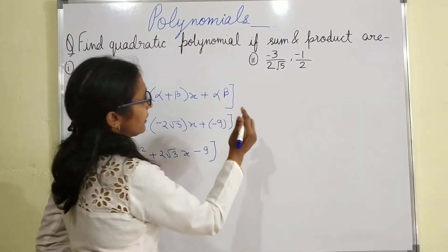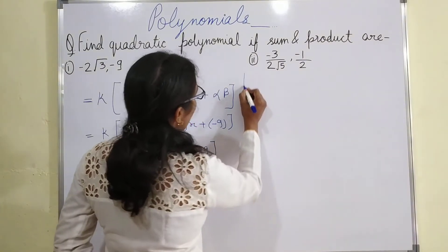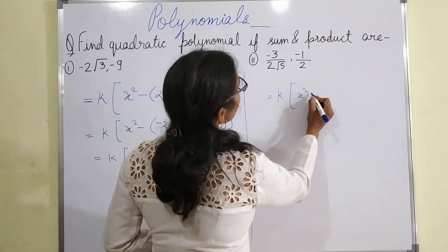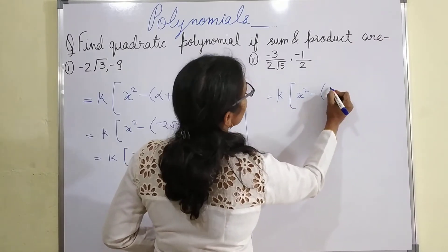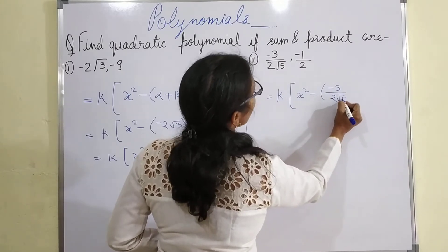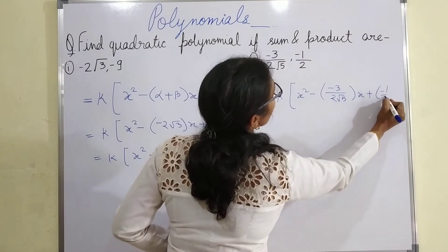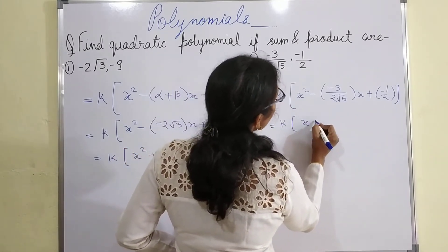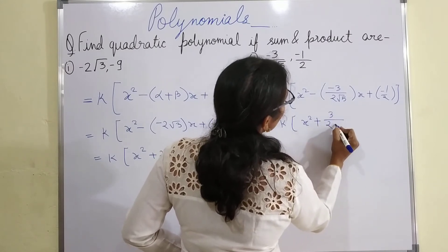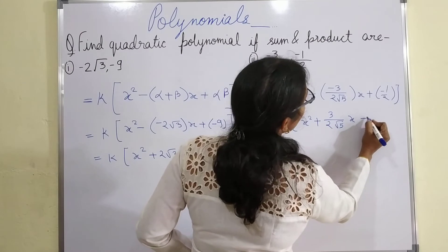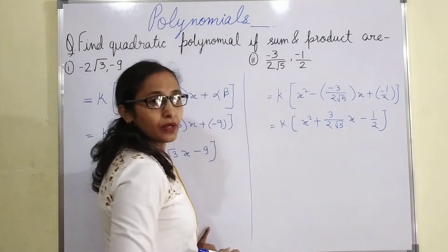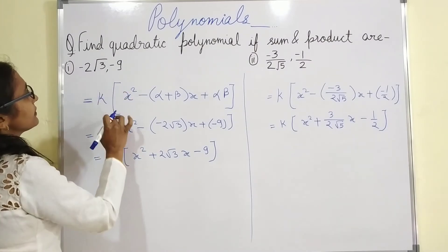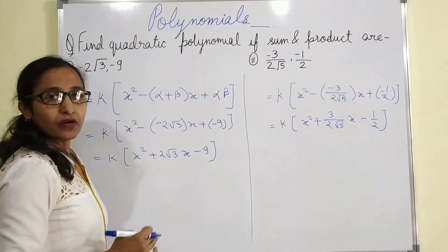For the second part, the quadratic equation will be x squared minus (−3/(2√5))x plus (−1/2), which gives x squared + 3/(2√5)x − 1/2. That is the quadratic equation. The general formula for making any quadratic equation is k[x squared − (sum of zeros)x + (product of zeros)].